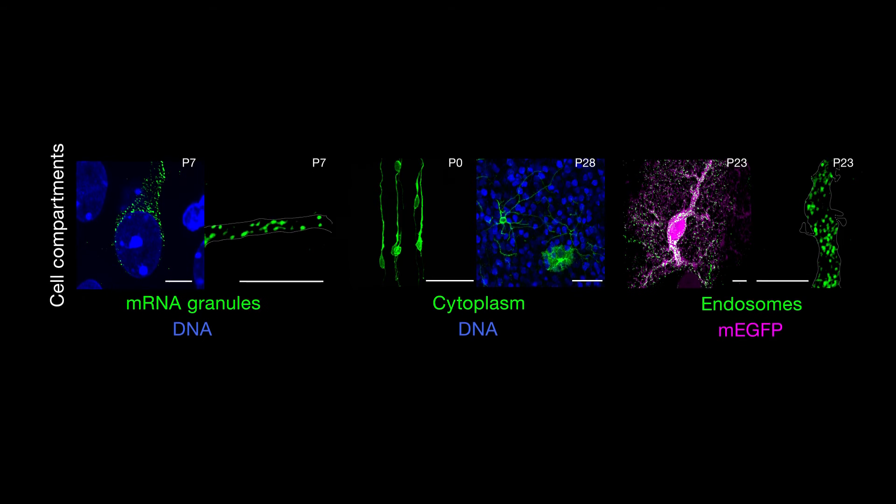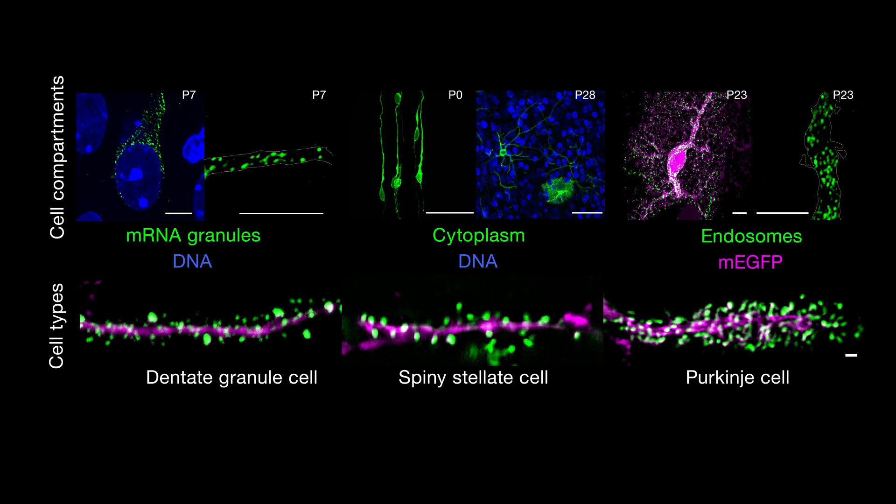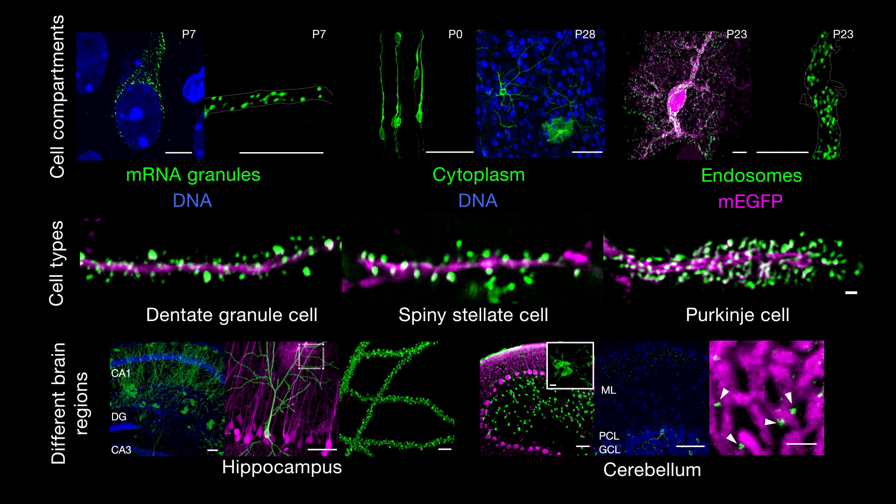The researchers showed that SLENDER could be used to label a variety of proteins, located in different compartments of cells, in different cell types, and in different regions of mouse brains of various ages.